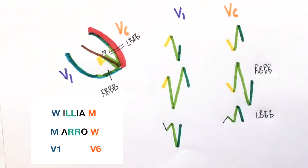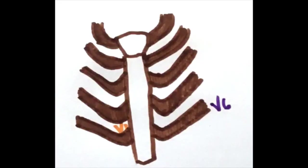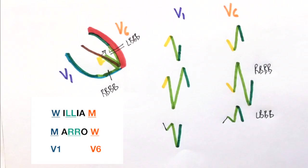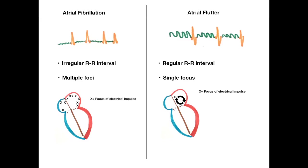So to summarize, for the left and right bundle branch blocks, always take a look at leads V1 and V6 and always look at the morphology of the QRS complex. Whenever an impulse is traveling towards a particular lead, there will be a positive deflection on that lead and if it's traveling away from a lead, there will be a negative deflection.